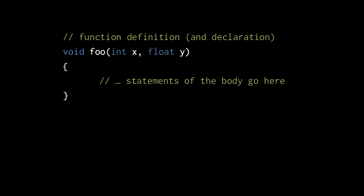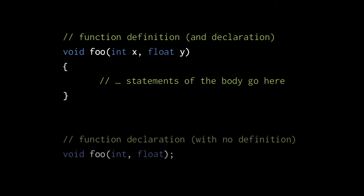So here, for example, we have a function definition that creates a function foo, which returns void and takes two parameters — an int called x and a float called y — and of course, to create a function, we must provide a body. In contrast, the declaration of the same function omits the body, and so instead ends with a semicolon. An important difference between definitions and declarations is that a variable or function may only be defined once, but may be declared as many times as needed.